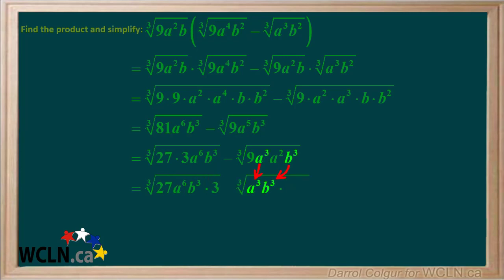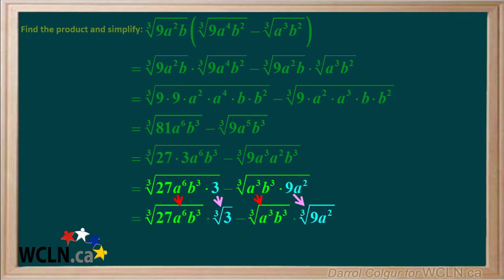Looking at the second term, we'll group the perfect cubes — a cubed and b cubed — on the left side of this radical, and the leftovers 9 times a squared on the right side of the radical. Now we'll split both of the cube roots into separate cube roots of perfect cubes and cube roots of leftovers.